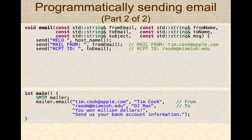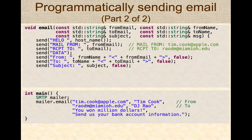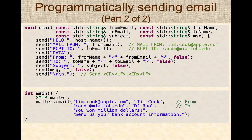We send MAIL FROM with the from email address, then RCPT TO with the recipient address. Then we start the DATA section, sending the from address, to line, and subject line — note that here we pass false so we don't wait for a server response. Then we send the actual message, end the data with a period on its own line, and send the QUIT command, completing the process of sending the email. This is a simple C++ program that can be used to send email messages — a link to the full source code will be in the comments.